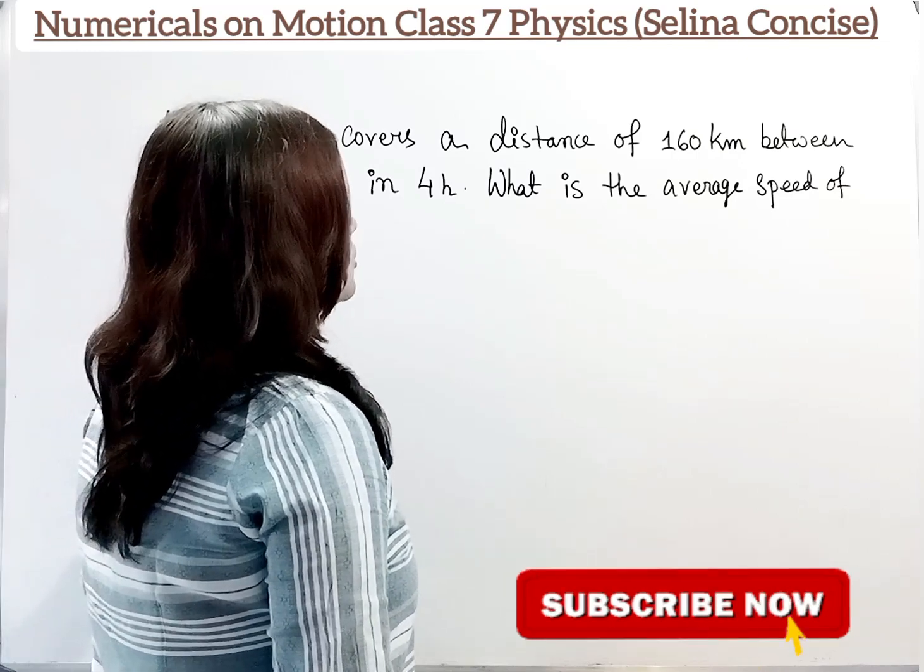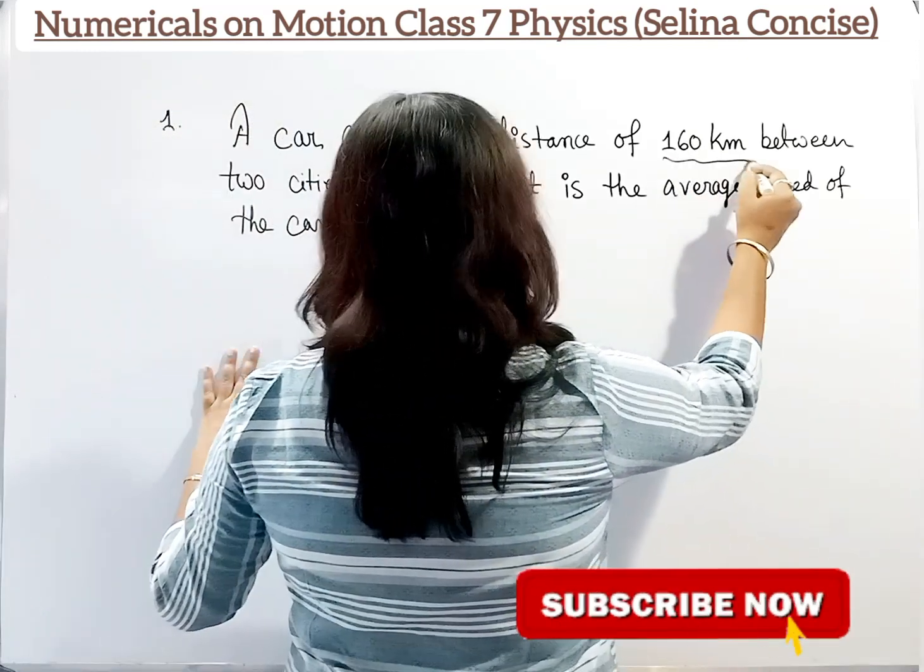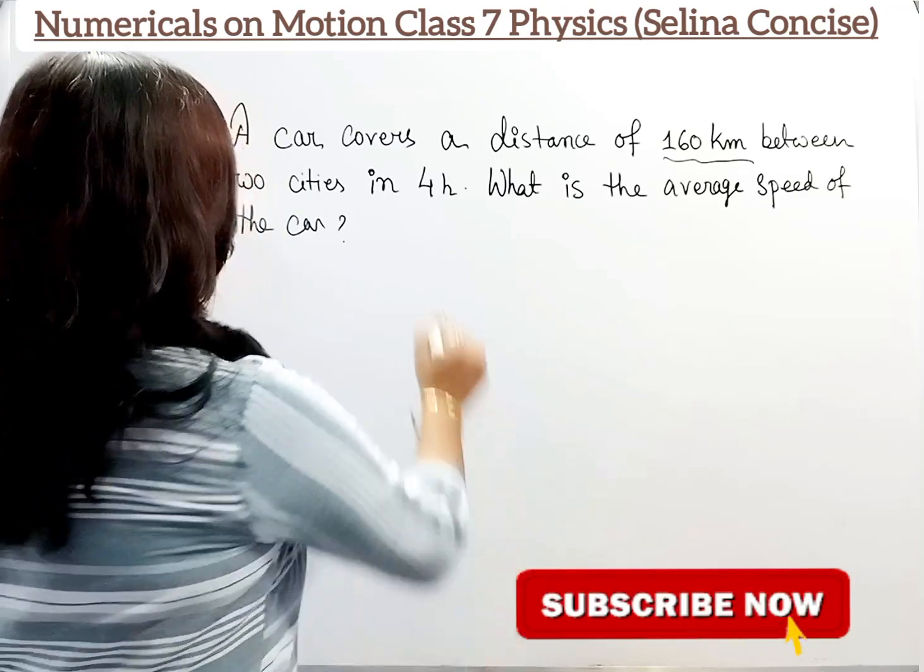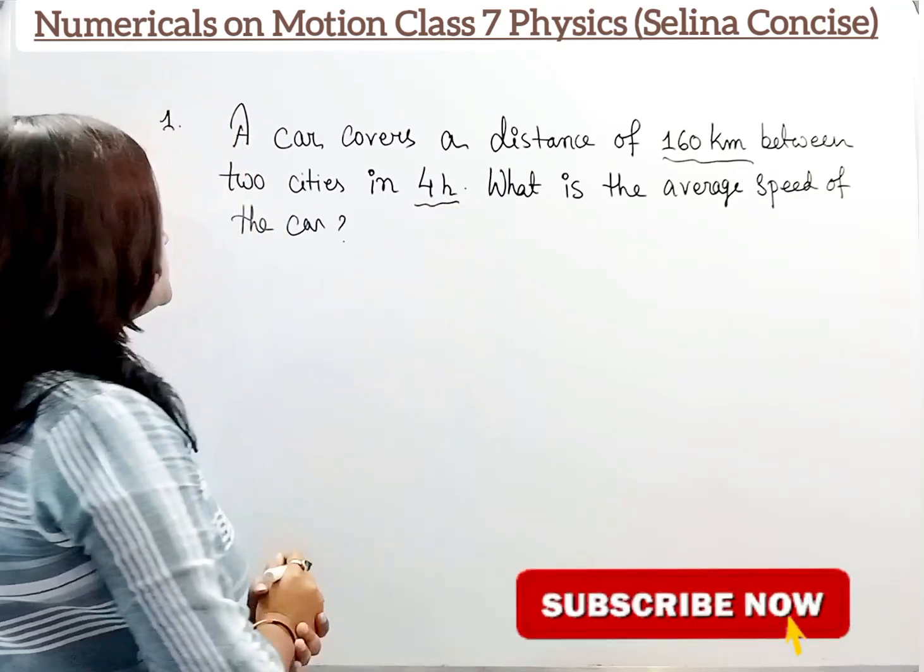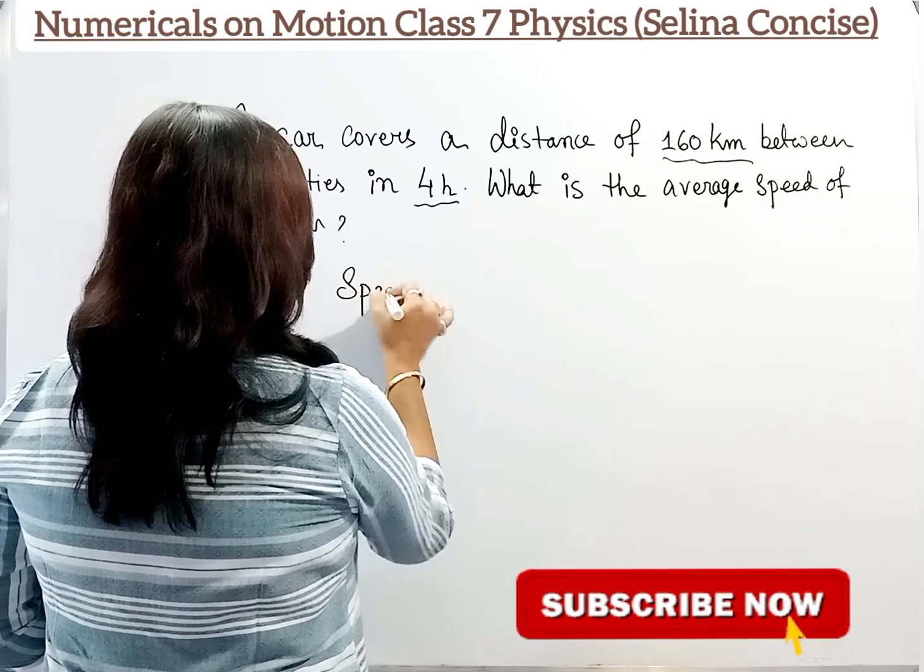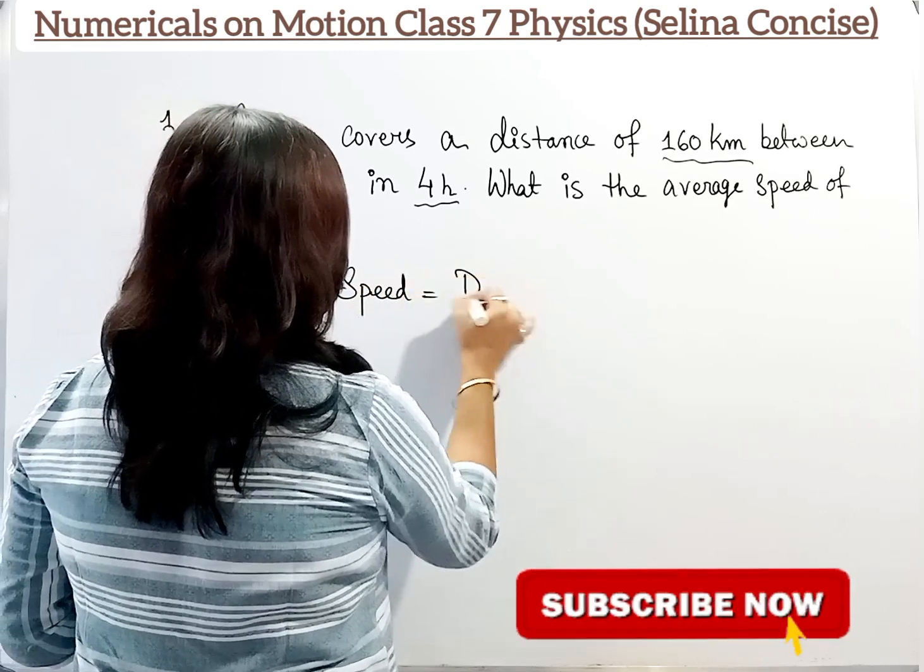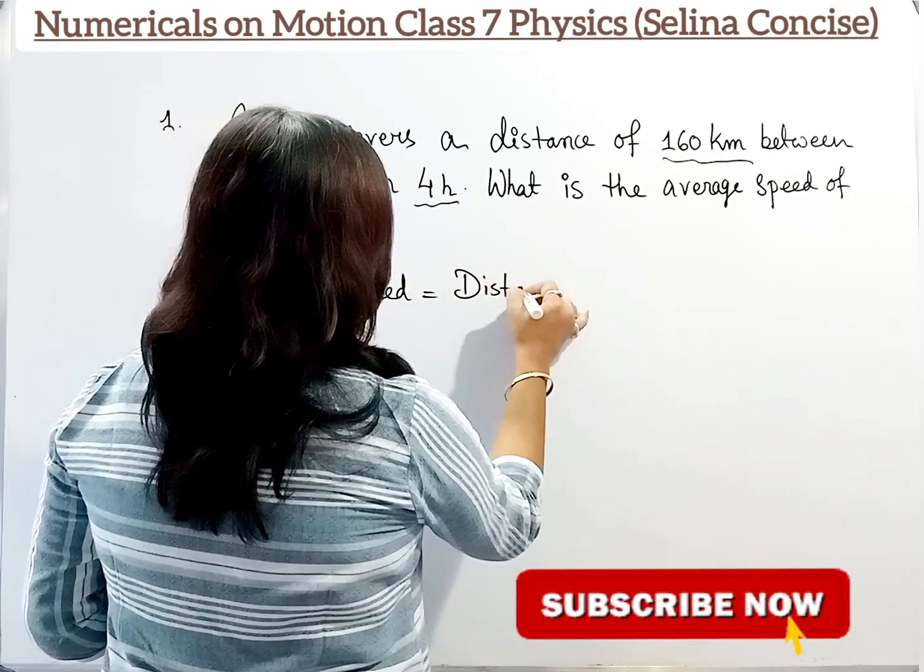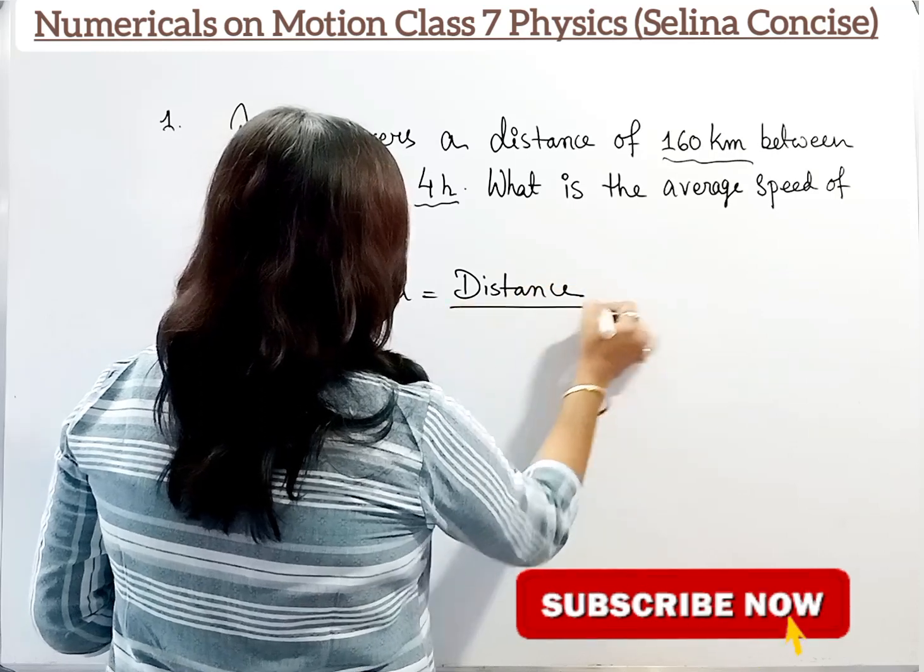A car covers a distance of 160 km between two cities in 4 hours. What is the average speed of the car?